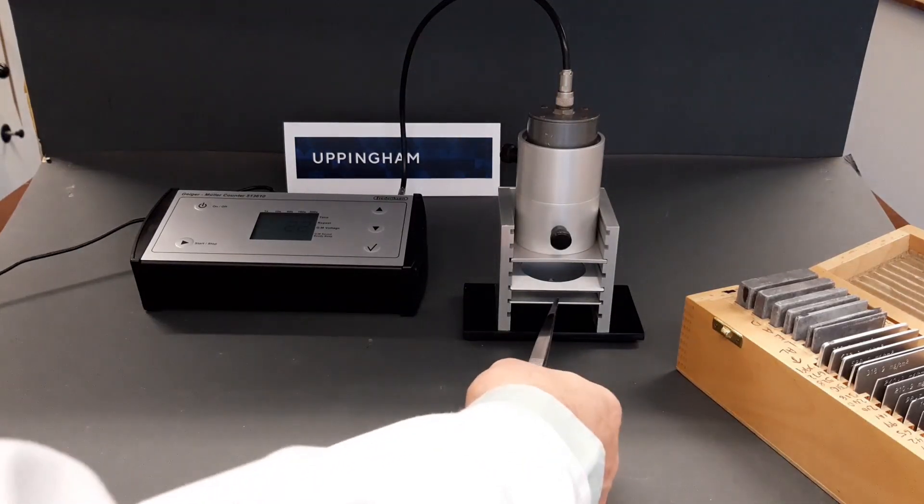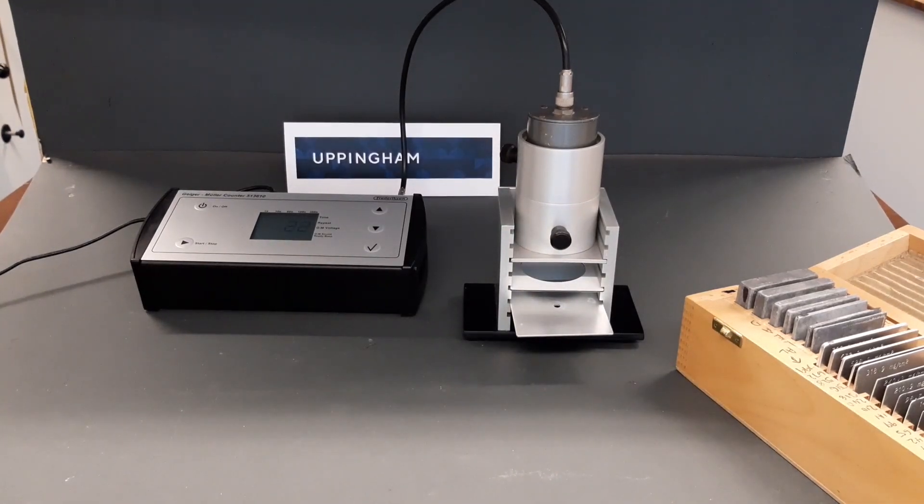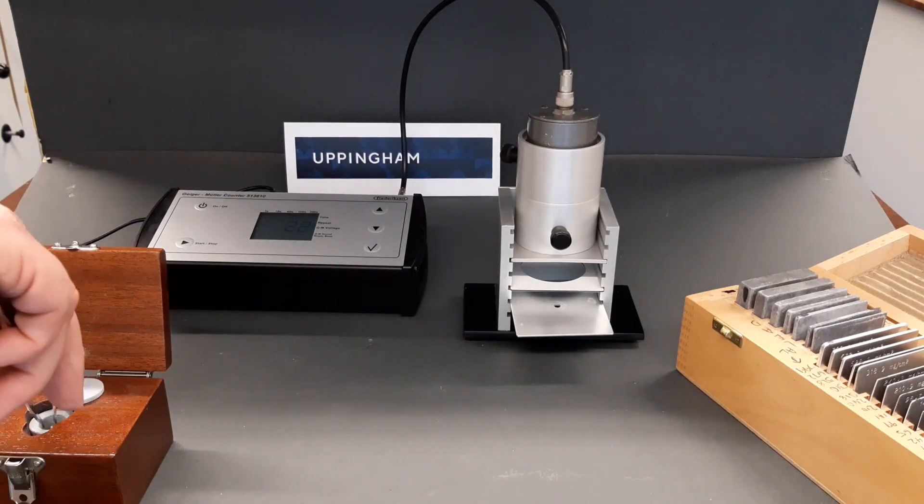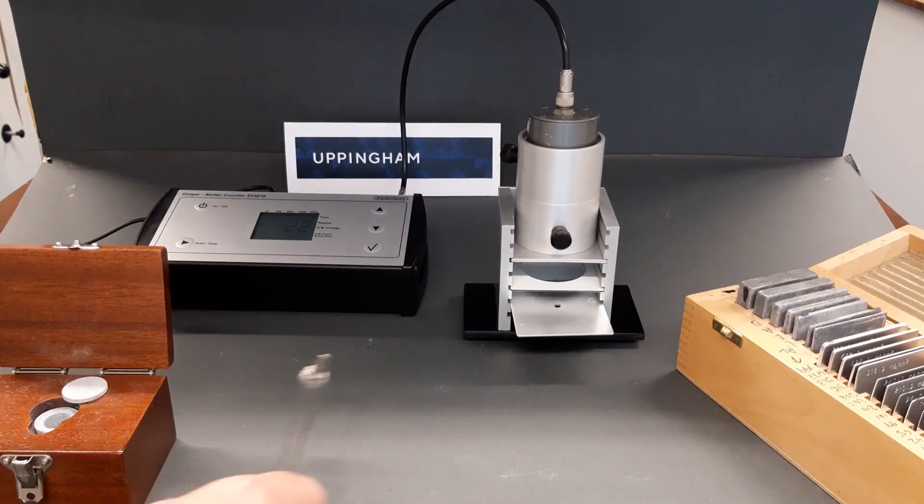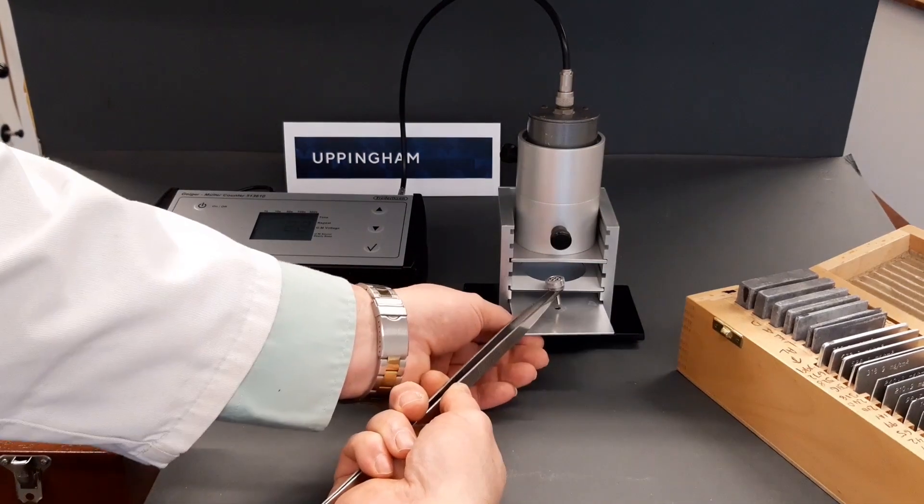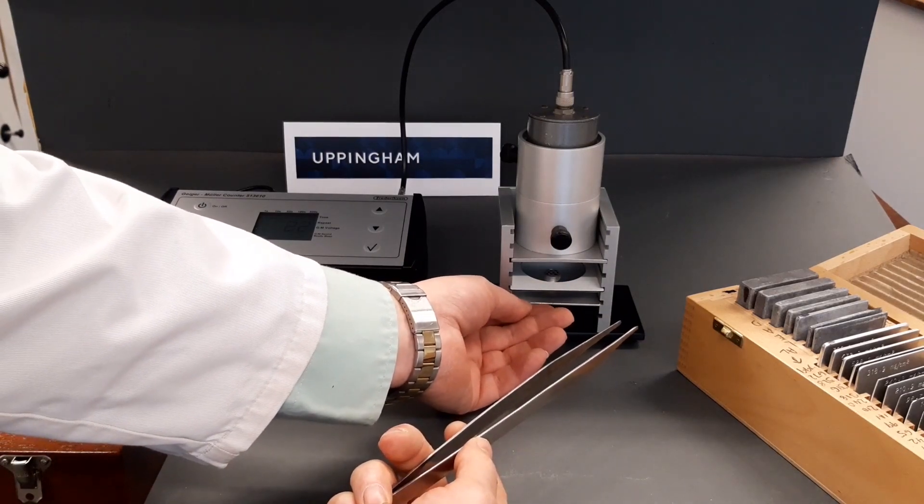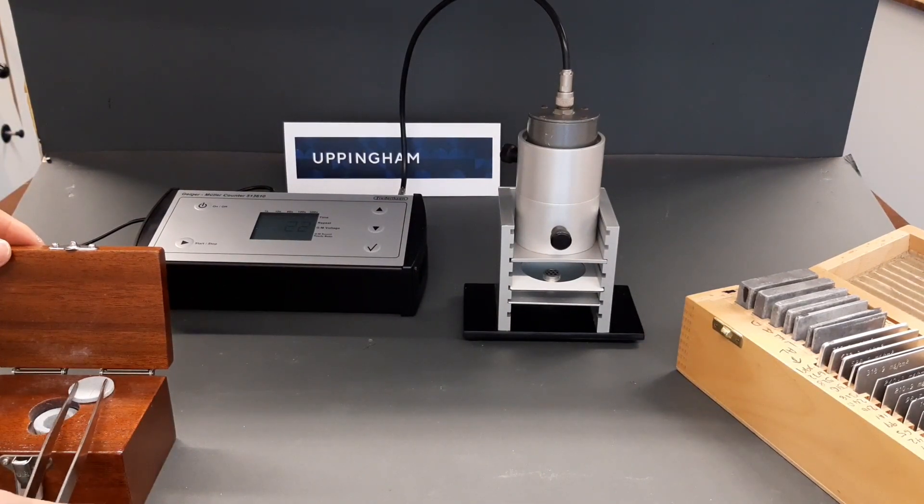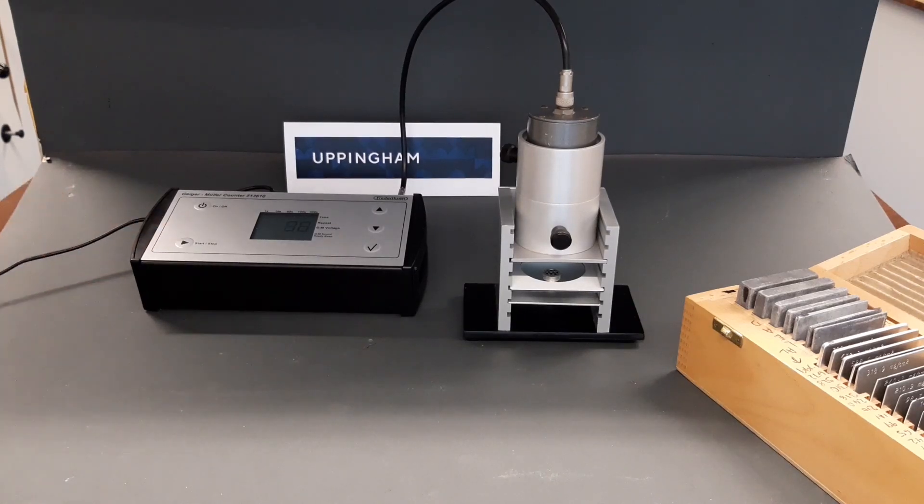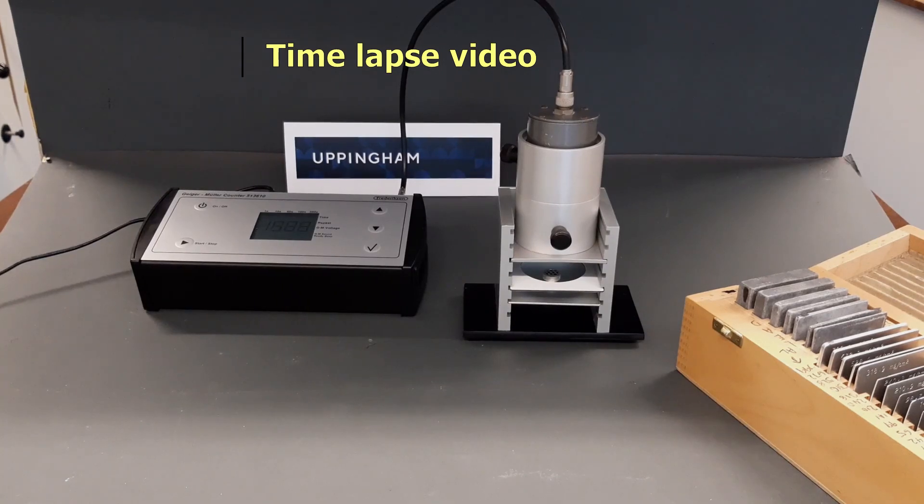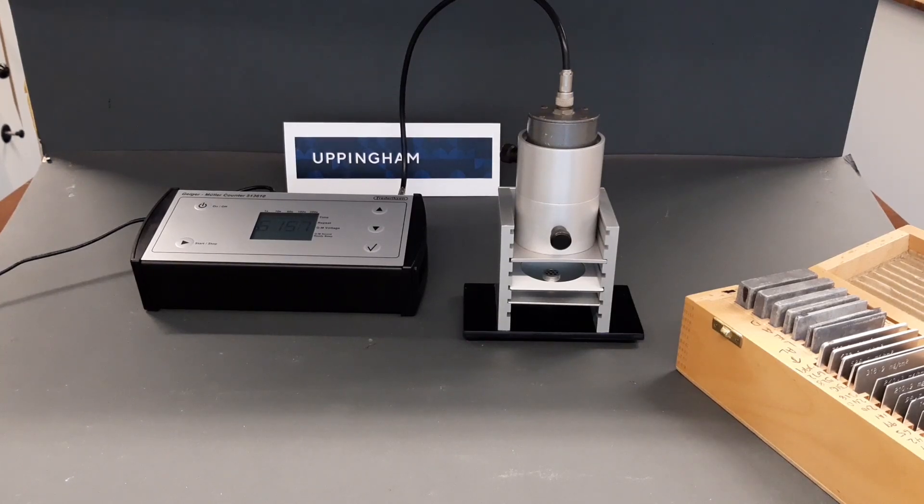We now need to take out the tray and insert the cobalt source. And we run the timing for this. And that gives us a 60 second count of 6157.